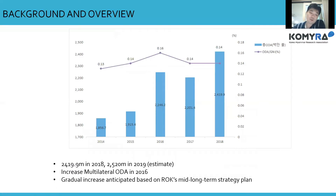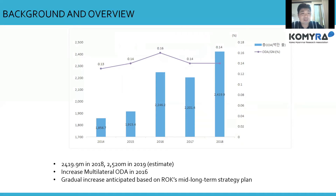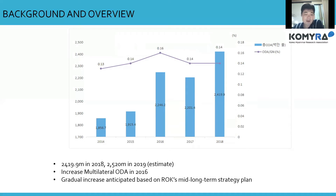This graph shows the figures of recent total ODA volume. The amount of ODA has gradually increased and is expected to continue increasing in 2020 and after. The estimated amount of ODA in 2019 is 2,520 million USD. Since multilateral ODA sometimes fluctuates year by year, in 2016 the amount reached 2,246 million USD, which is 0.16% per GNI, then slightly decreased in 2017 before rising to 2,420 million USD in 2018.